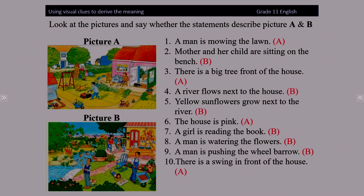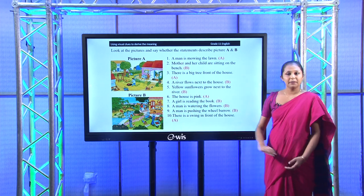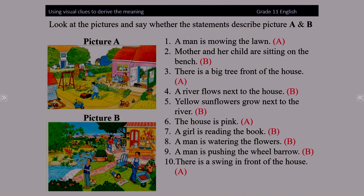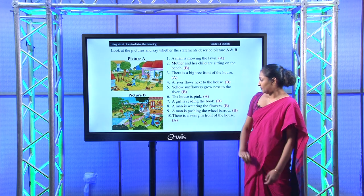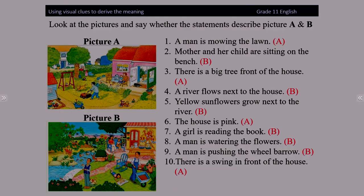Five: yellow sunflowers grow next to the river — again, the word river helps you understand the picture, so you can find the yellow sunflowers in picture B. Six: the house is pink — A. Seven: the girl is reading the book — B. Eight: the man is watering the flowers; you can see in picture B a man near the flower bushes watering them. Nine: a man is pushing the wheelbarrow — picture B. Ten: there is a swing in front of the house — you can see that in the first picture, so the answer is A.